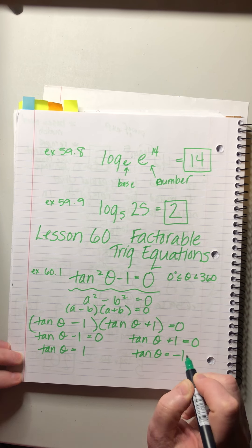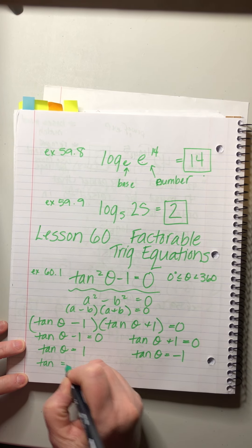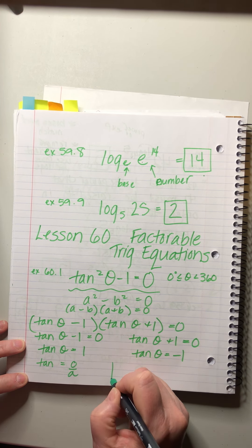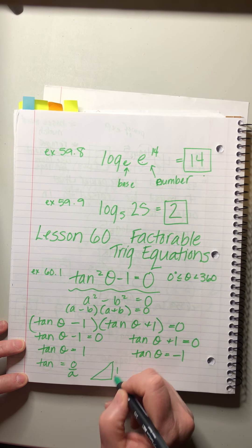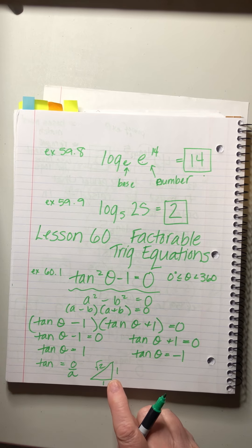So tan θ equals 1 or tan θ equals -1. Now, what triangles give us a tangent of 1 or -1? Tangent is opposite over adjacent, so I'm thinking of a 45-45-90 triangle, because that's 1, 1, √2. Any combination of 45° angles could give us these values.